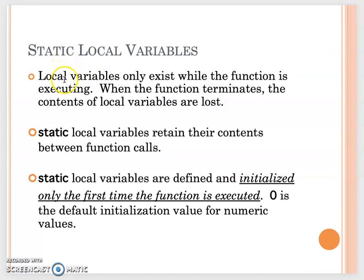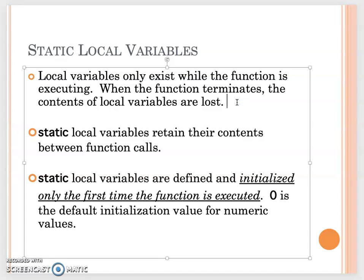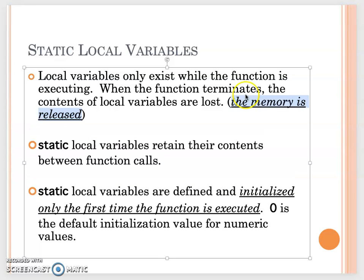When we have a local variable, as we talked about in the previous video, the local variable only lives in the current function. The local variable scope only exists while the function is executing. When the function terminates, the content of the local variable is lost — meaning the memory is released.